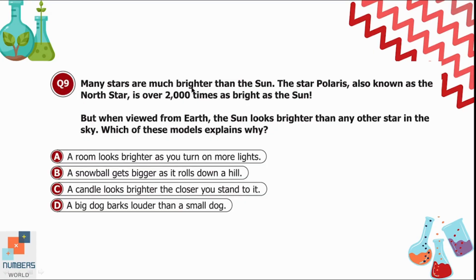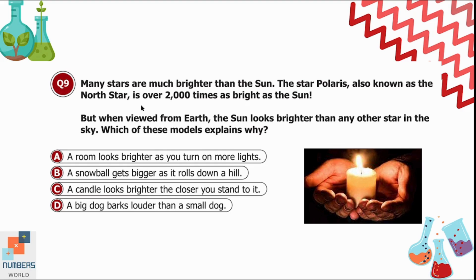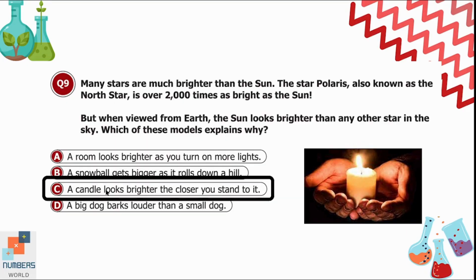Question 9: Many stars are much brighter than the Sun. The star Polaris, also known as the North Star, is over 2000 times as bright as the Sun, but from Earth the Sun looks brighter than any other star. Which model explains why? Option C — a candle looks brighter the closer you stand to it — is correct. We can represent the Sun as a candle: proximity makes it appear brighter.